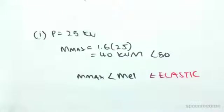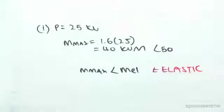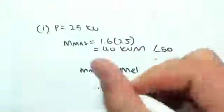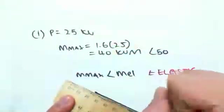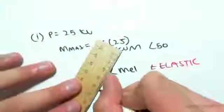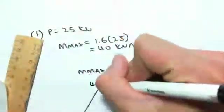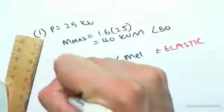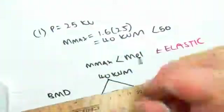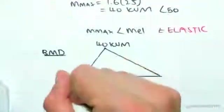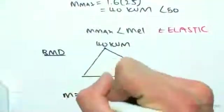So it's very easy then to find the bending moment and curvature diagram. The bending moment diagram is just simply going to be 1.6P at the top there. So the bending moment diagram is going to be 1.6P of 40 kilonewton meters. That's the bending moment diagram.